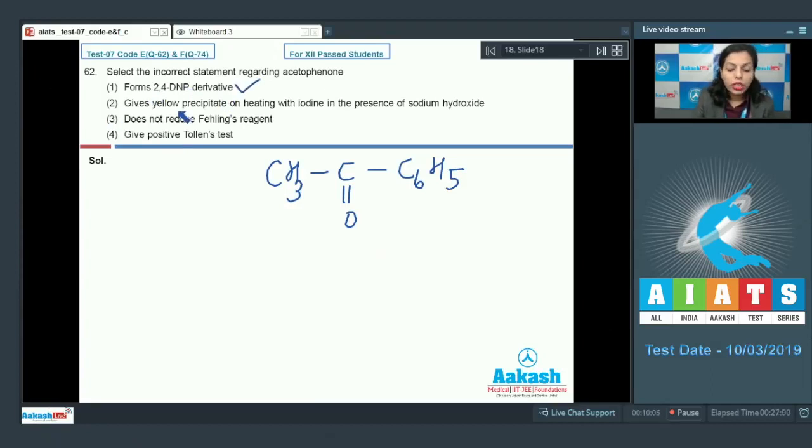Second option gives yellow precipitate on heating with iodine in the presence of sodium hydroxide. If I have this ketone and I just treat it with iodine in the presence of sodium hydroxide, what test is that? That is iodoform test. And in that test there is the formation of the precipitate of iodoform that is yellow in color. It means this statement is also correct.